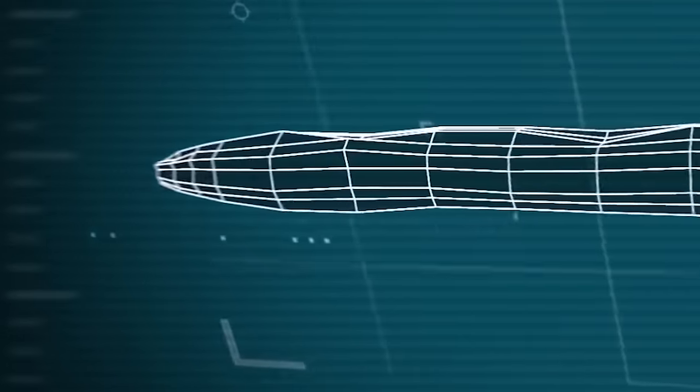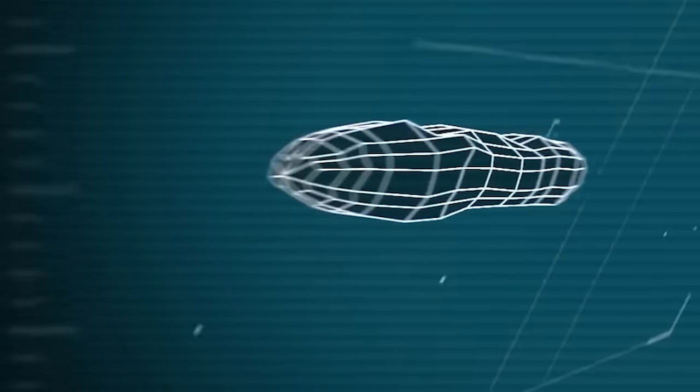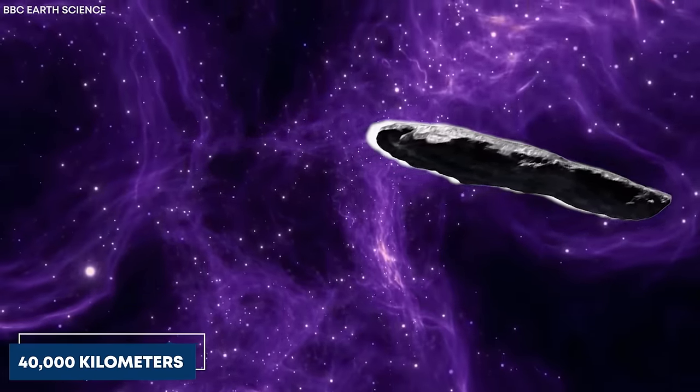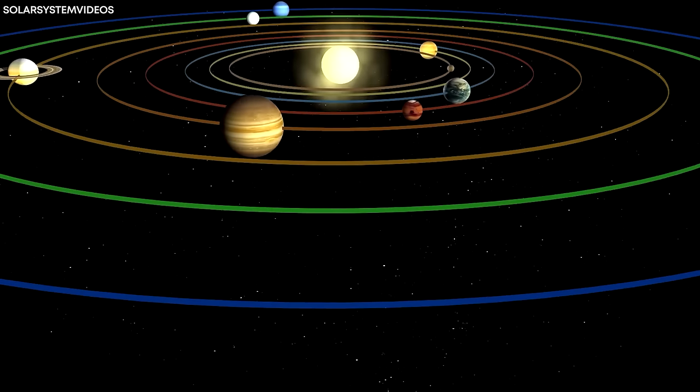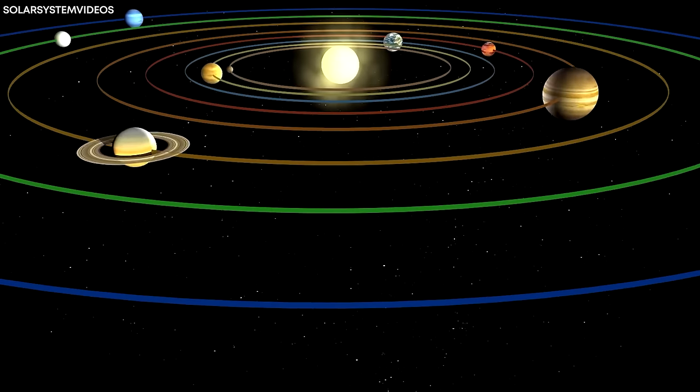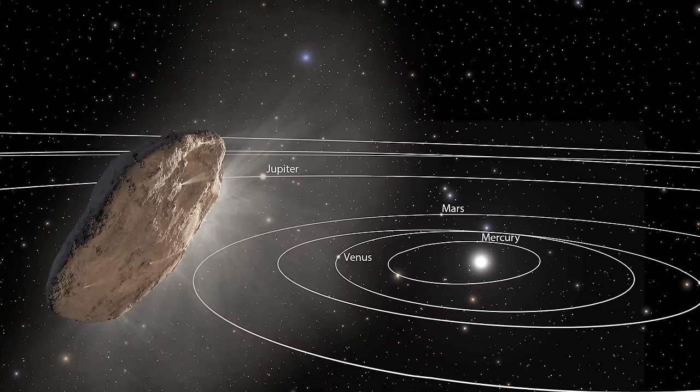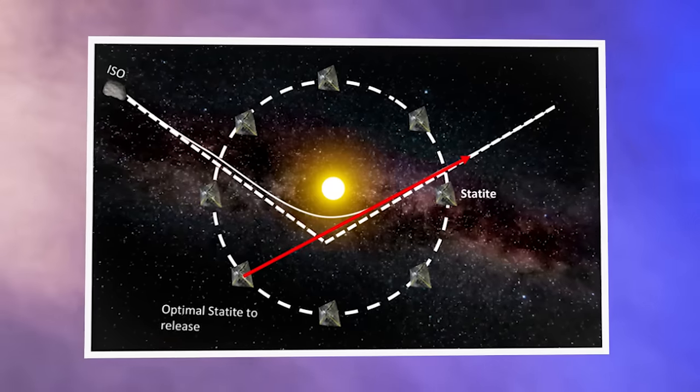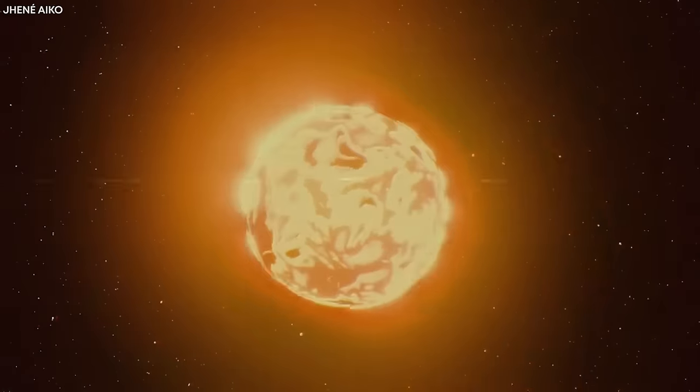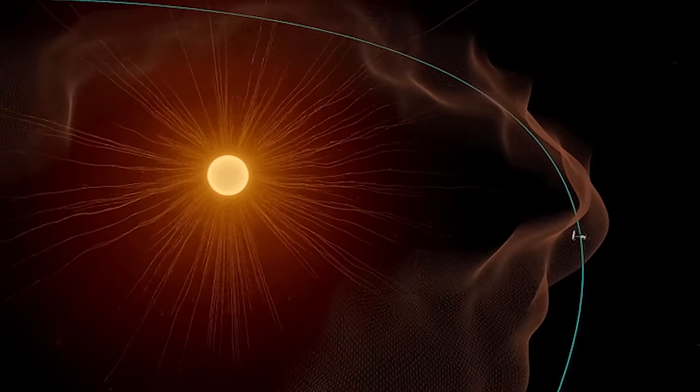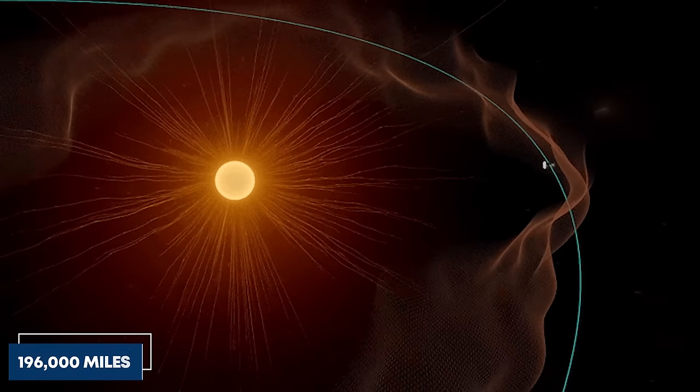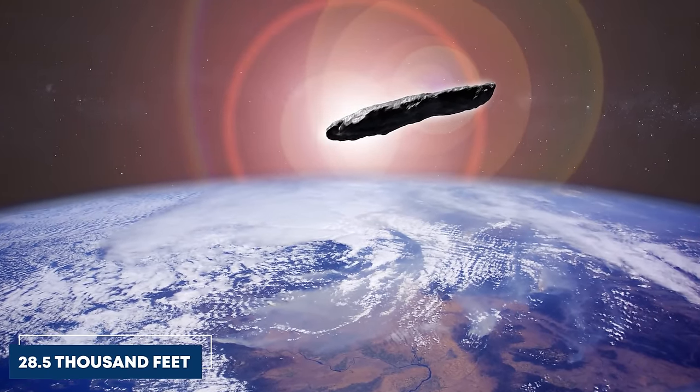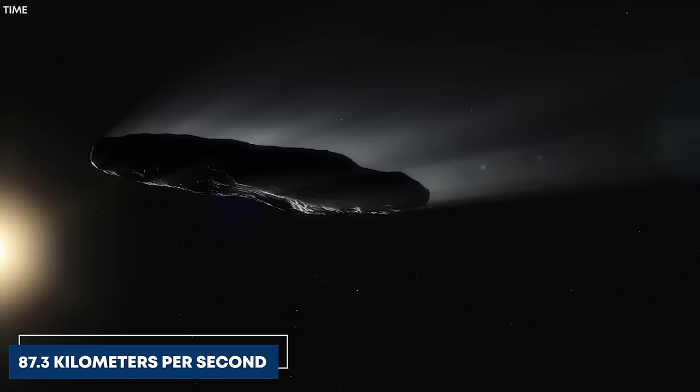Oumuamua stood out from other known space objects due to its astonishing speed. Traveling at an incredible velocity of around 25,000 miles, or 40,000 kilometers per hour, it already surpassed other celestial bodies within our solar system. However, the most intriguing aspect of Oumuamua's journey was yet to be revealed. On September 9, 2017, Oumuamua successfully executed a slingshot maneuver around the sun, hurtling at an astonishing speed of 196,000 miles per hour. To put it into perspective, that's equivalent to about 87.3 kilometers per second.